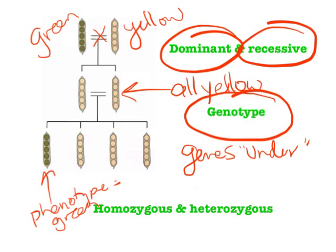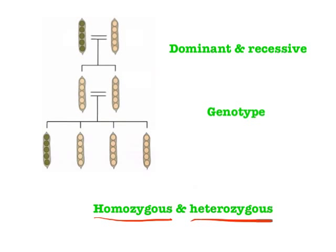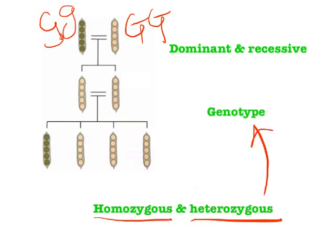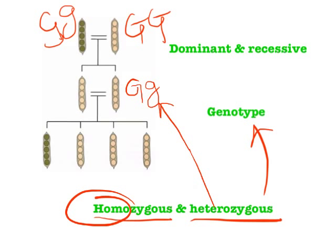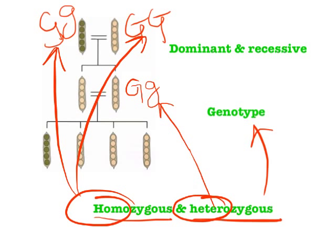The last two terms — homozygous and heterozygous — are used to describe genotypes, not phenotypes. The green plant, shown with lowercase g, and the yellow plant both bred together. The F1 offspring in the middle have one of each — one little g from one parent and one big G from the other. That look is what we call heterozygous — hetero means different. Homozygous means same. The two original parents were both homozygous — one was homozygous for green, the other for yellow — and the F1 offspring, having one of each, are heterozygous.